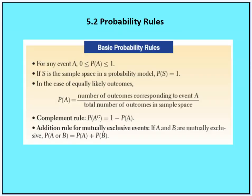Here's a summary of the probability rules from the book. For any event, the probability of A is between 0 and 1. If S is a sample space, the probability of S equals 1. For equally likely outcomes, probability equals the number of winners over the number of possible outcomes. The complement of A is 1 minus the probability of A. And the addition rule for mutually exclusive events: if A and B are mutually exclusive, the probability of A or B equals the probability of A plus the probability of B.